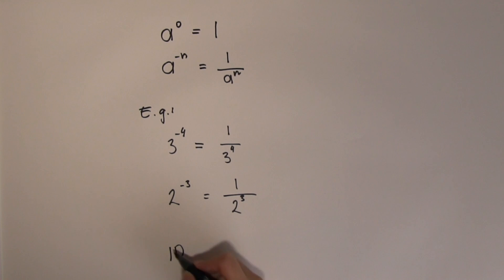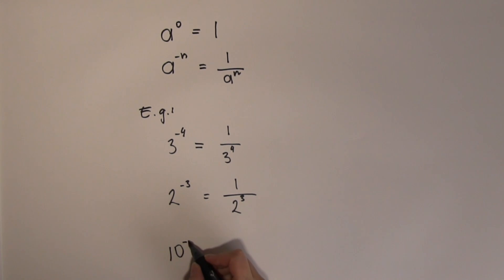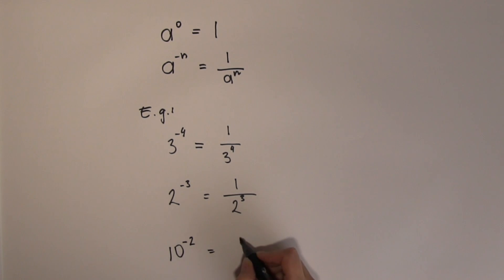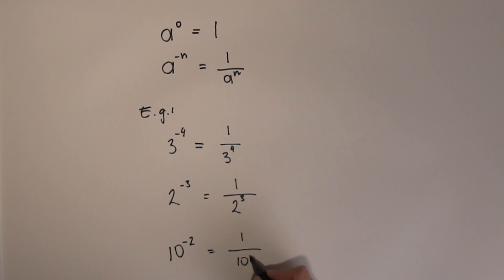One more example: ten to the minus two is the same as one over ten to the power of two.